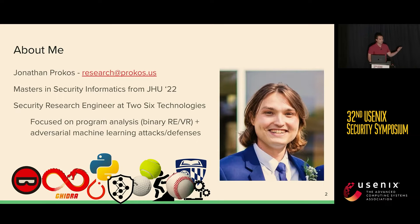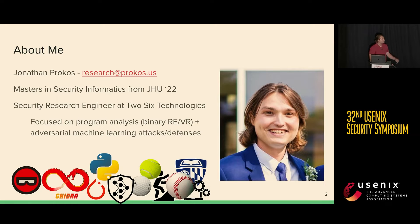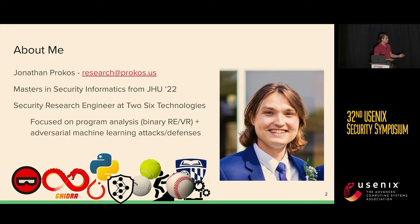I'll start off just saying a little bit about myself. My name is Jonathan Prokus. I completed this research during my undergraduate and graduate studies at Johns Hopkins University. I'm currently working at 2-6 Technologies in Arlington, Virginia, performing cybersecurity research on primarily binary reverse engineering and vulnerability research, as well as adversarial machine learning attacks and defenses.